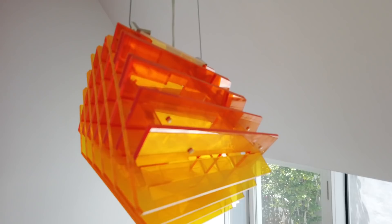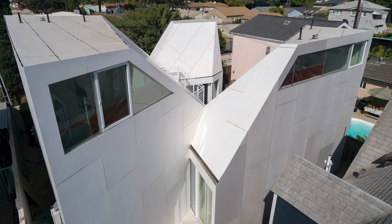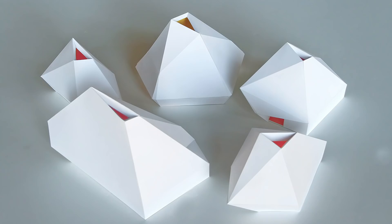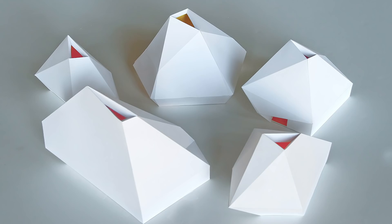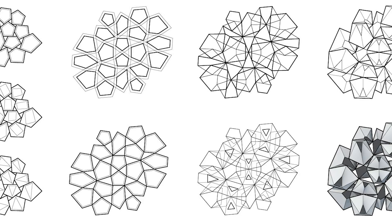When we began the project, we were particularly interested in complex spatial relationships, and this project presented us with a set of problems that really engaged that interest. We were looking at some of Peter Pierce's research in the complex geometry that you find in nature. We were looking at polyhedra and alternate kinds of ways that spaces fit together — this was a set of research that was going on in the office.